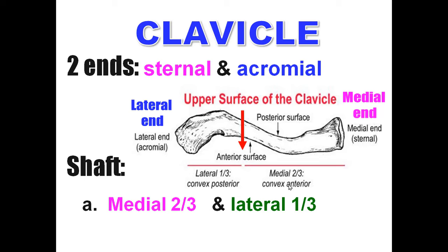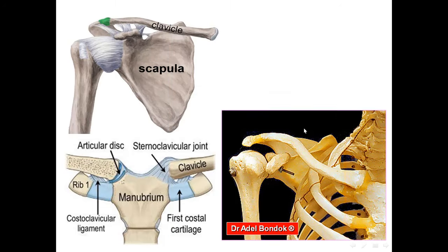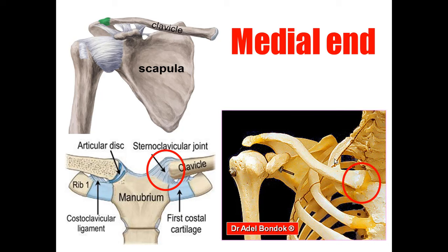The medial two-thirds are convex anteriorly; the lateral one-third is convex posteriorly. The junction between the medial two-thirds and the lateral one-third is the site of fracture of the clavicle. The shaft has four surfaces: upper, inferior, anterior, and posterior. The medial end articulates with the manubrium of the sternum to form the sternoclavicular joint, which is a synovial saddle joint. The lateral end is flattened and articulates with the acromion of the scapula to form the acromioclavicular joint, which is a plane synovial joint.